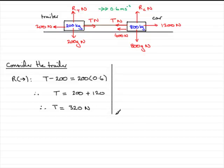If you decided to do the car instead, let's just run through that. Consider the car. What equation should you have had? Well, hopefully you'd resolve to the right again in the direction of motion. You'd have had 1200, then we've got minus the tension and minus the 400 newtons.